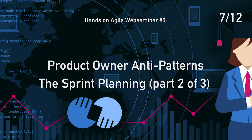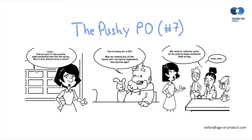Number seven: the pushy Product Owner. Last time you took 25 points, now it's only 17 — how come? First of all, let's get back to the manual, the Scrum Guide: the number of items selected from a product backlog for the sprint is solely up to the development team. The idea is that the product owner makes a suggestion — ideally by defining a sprint goal — and then the team picks the stories to make the sprint goal happen, given capacity.